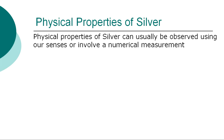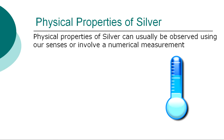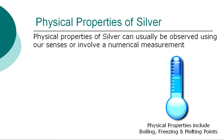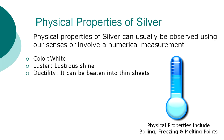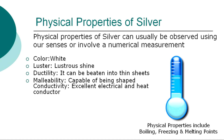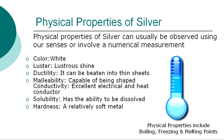The more specific physical properties of silver can usually be observed using our senses or involve a numerical measurement, such as determining its boiling, freezing, and melting points. The physical properties of silver are: Color — white. Luster — lustrous shine, capable of a high degree of polish. Ductility — it can be beaten into extremely thin sheets. Malleability — capable of being shaped or bent. Conductivity — excellent electrical and heat conductor; it has the highest electrical and thermal conductivity of any metal. Solubility — ability to be dissolved. Hardness — a relatively soft metal. Density — it is a dense metal.